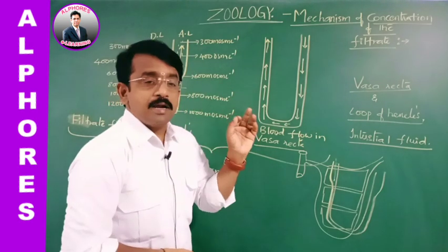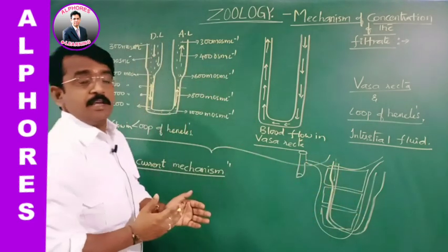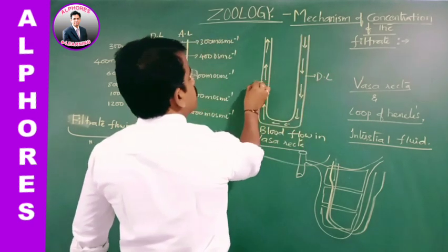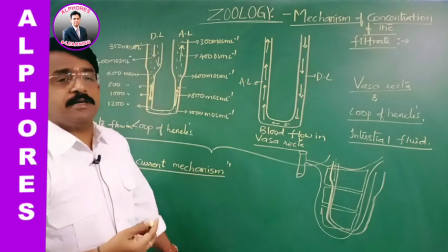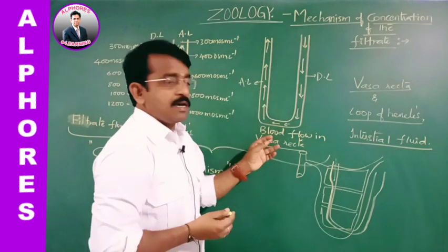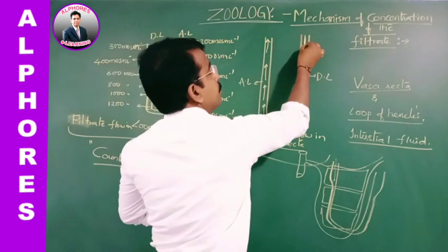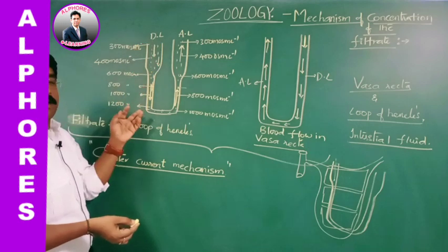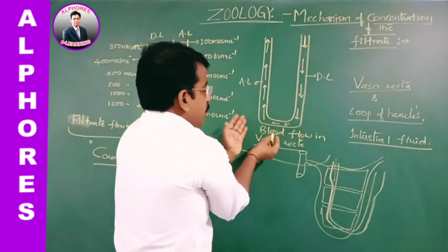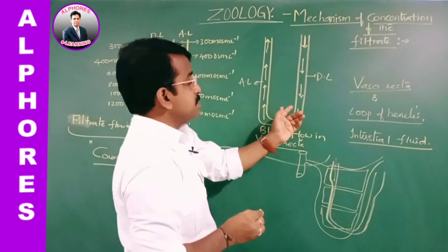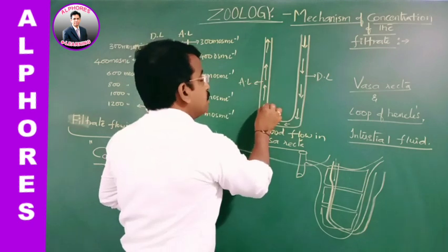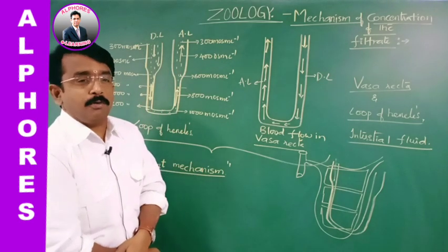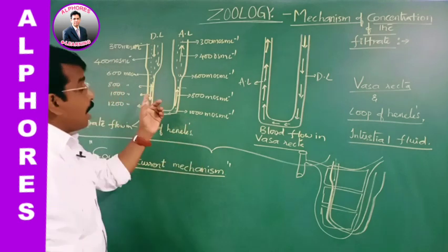Vasa Recta is the network of capillaries in the loop of Henle region, with two limbs: descending and ascending. If blood in Vasa Recta flows from outer medulla to inner medulla, this is the descending limb. In the ascending capillary, blood flows from inner medulla to outer medulla. So this is counter-current flow and opposite concentration.